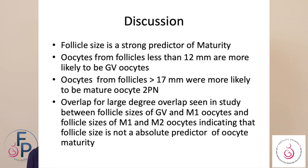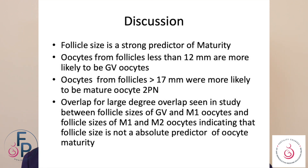But what is the importance of follicle size? It seems to be a better predictor of maturity. Oocytes obtained from follicles less than 12 millimeters are more likely to be GV oocytes, and oocytes from follicles more than 17 millimeters were more likely to be MII oocytes. There is an overlap between follicle sizes for GV and MI, and between MI and MII oocytes, indicating that follicle size is not an absolute predictor of oocyte maturity.